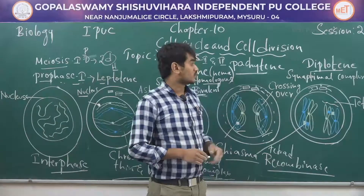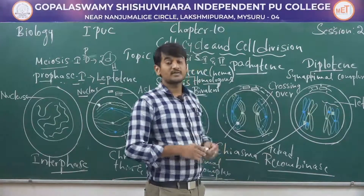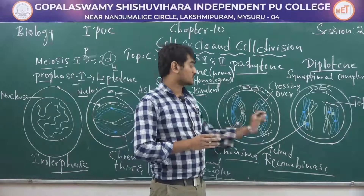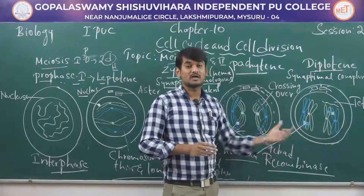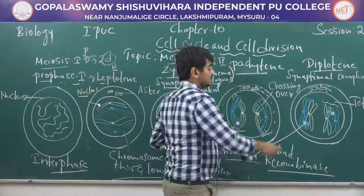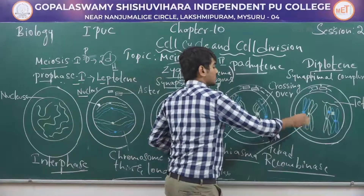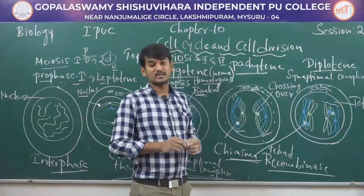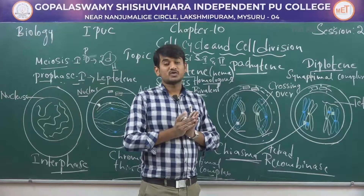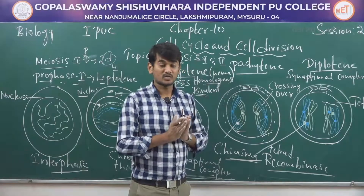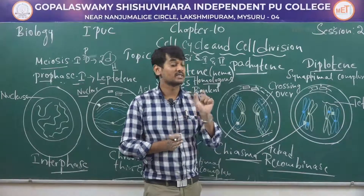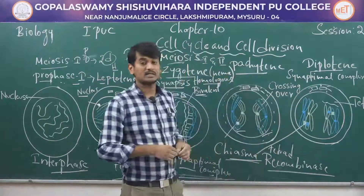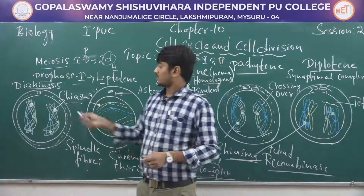The next stage is diplotene, also called diplonema. Here the dissolution of the synaptonemal complex occurs, meaning the attraction between two homologous chromosomes disappears. The recombined homologous chromosomes separate from each other, except at the points of crossing over. These points form X-shaped chromosomes, which are called chiasmata or chiasma.